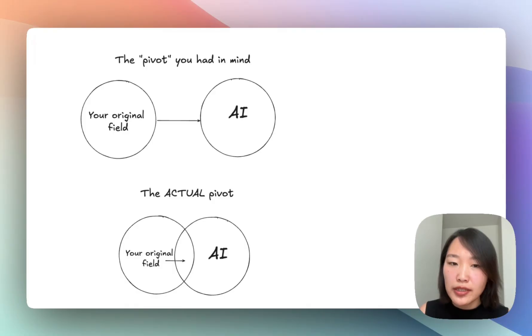But I think that whatever field you were working in before should become your asset, not your liability. This chart is what I mean. You might think the pivot to AI will look something like the top chart where you're joining a completely unrelated field that has nothing to do with what you were working on before. But actually it's going to look more like the bottom one. AI is going to have an overlap between whatever you were working on before, and this is where you'll shine. If you were working in education, then look at companies that are trying to disrupt education with AI. If you were a lawyer, then look at companies working on disrupting the legal field with AI.